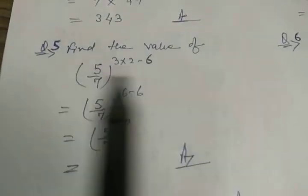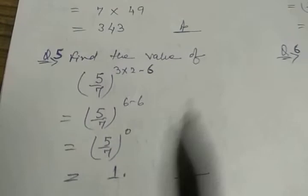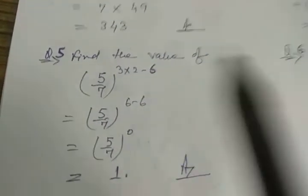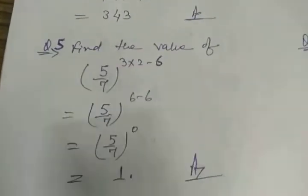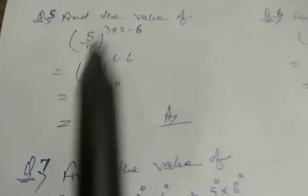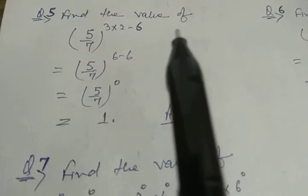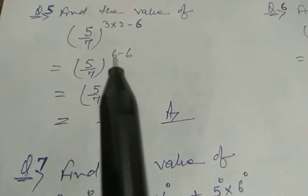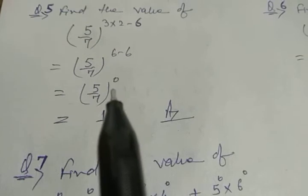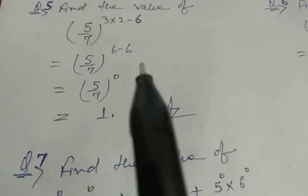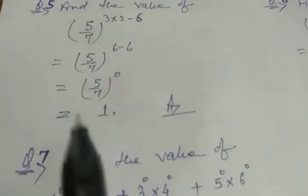Next: find the value — that means evaluate or simplify, all are the same. Here we have (5/7) to the power 3×2×(-6). So 3×2×(-6) = 6×(-6), which gives power 6 minus 6 = 0, and anything to the power 0 is 1, so the answer is 1.